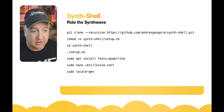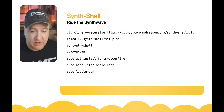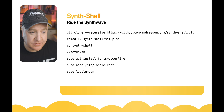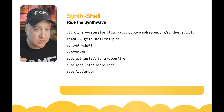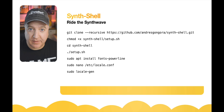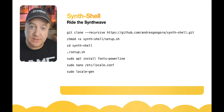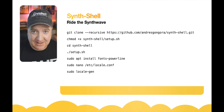Then we're going to change into the Synth Shell directory, and run the setup.sh program which will install it and give us lots of options. After that we can install some fonts — the Powerline fonts — which need to be installed on the host machine as well as the client. If needed, we can also change the locale; the machine needs to be a UTF-8 locale for this to work.